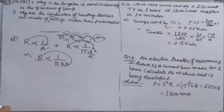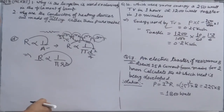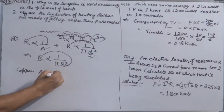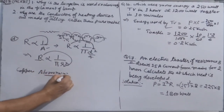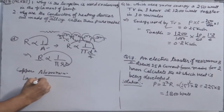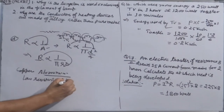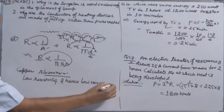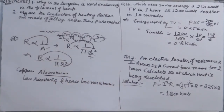Part E: Why are copper and aluminum wires usually used for electricity transmission? Because both copper and aluminum have low resistivity and hence low resistance, which allows maximum current to be passed through the circuit with minimum energy loss.